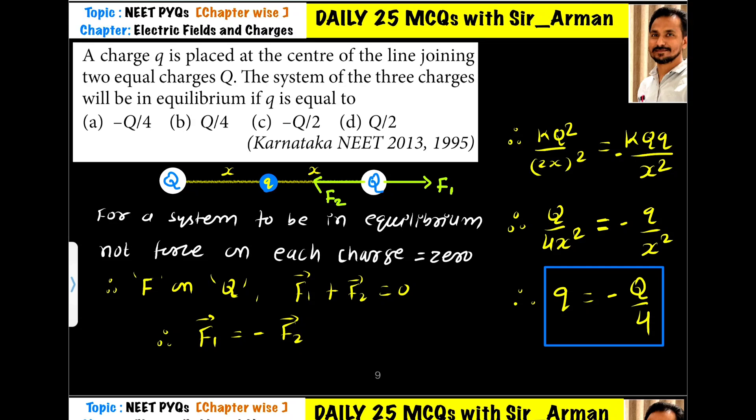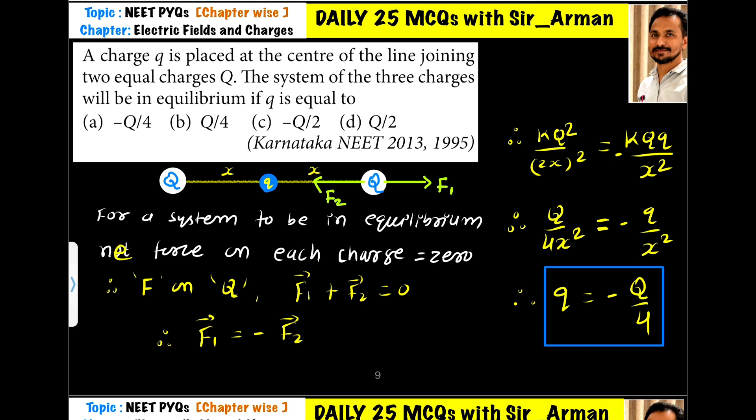A charge q is placed at the center of the line joining two equal charges Q. Let us assume they are separated by distance 2x. The system of three charges will be in equilibrium. For a system to be in equilibrium, the net force on each charge should be equal to zero.